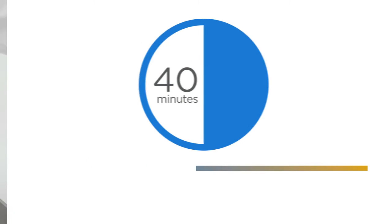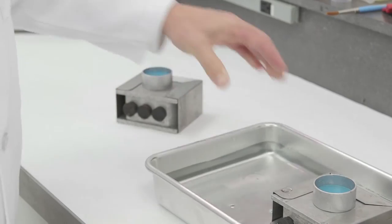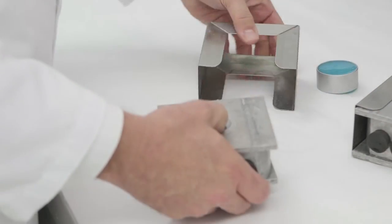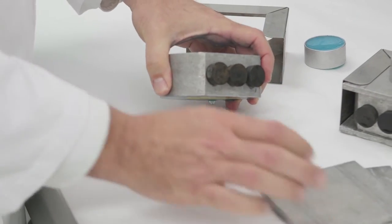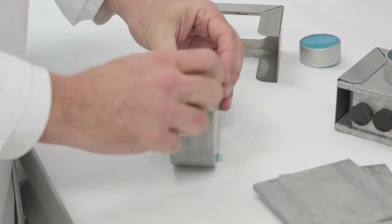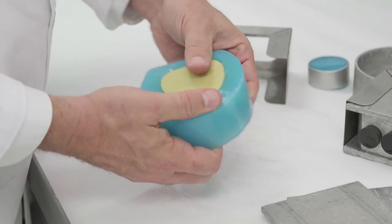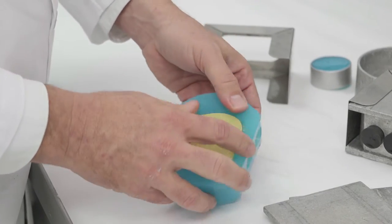After 40 minutes, remove flask from water and deflask. Then remove master model and wax up from the PolyFlex.